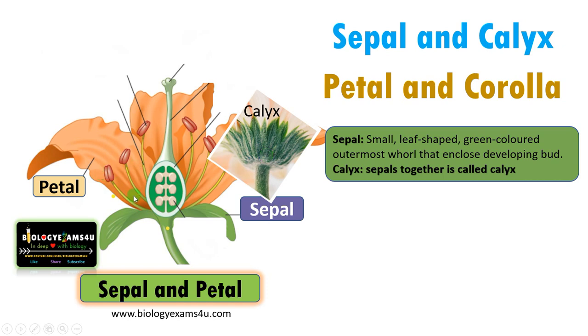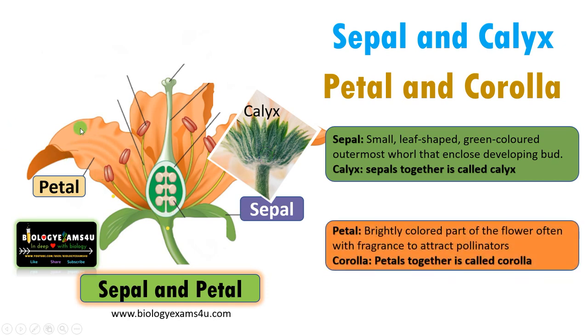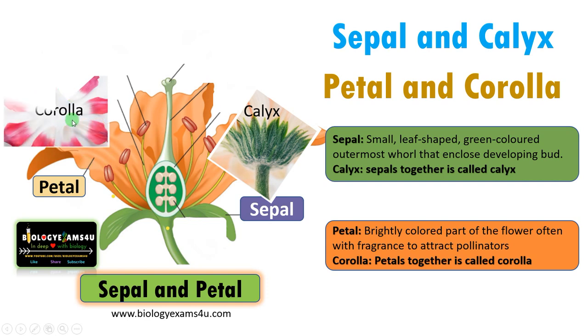The second term is petal. Petal is a brightly colored part of the flower, often with fragrance, to attract pollinators. A collection or group of petals is called the corolla.